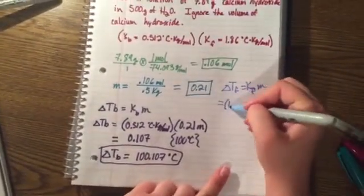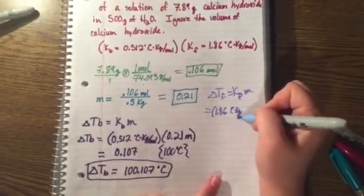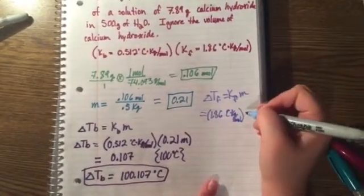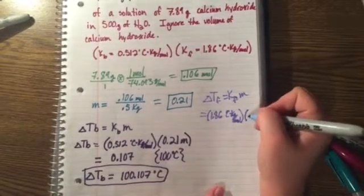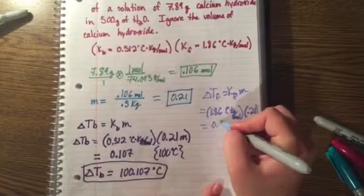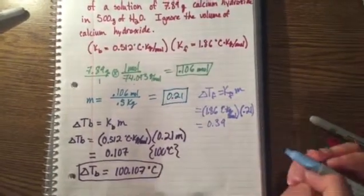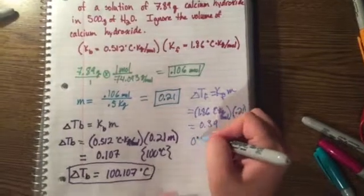This will give us 1.86 degrees Celsius times kilogram per mole multiplied by our 0.21 which will give you 0.39. Our normal freezing point for our water is 0 degrees Celsius.